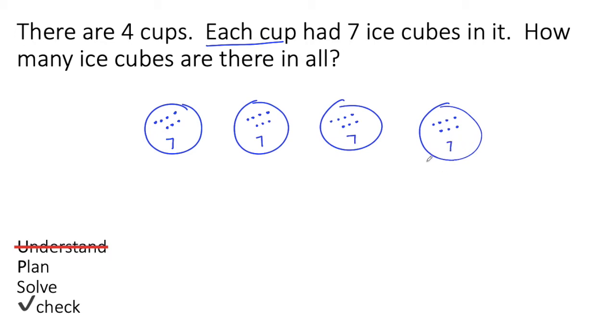Now it says how many ice cubes are there in all? So that means I'm counting the ice cubes. I'm going to count the ice cubes in this cup, the ice cubes in this cup, the ice cubes in this cup, and the ice cubes in this cup. And that's what I don't know. So I'm going to circle all of my ice cubes like this to show that that's what I'm trying to figure out - how many ice cubes there are in all.